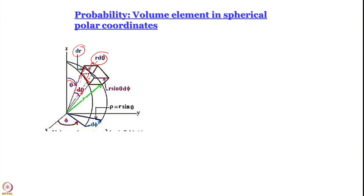Since dθ is a small angle, the arc length is r·dθ — this is the expression for the length of an arc, something we learned in three-dimensional coordinate geometry. So two sides of the volume element are defined. For the third side, we go down to the xy plane, where φ is defined. This angle is φ — the angle between the projection of the position vector in the xy plane and the x-axis. We increase that angle by dφ. The relevant length here is r sinθ, so the arc length is r sinθ dφ.